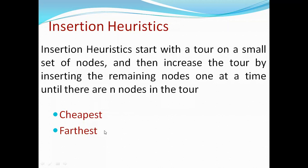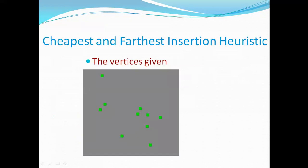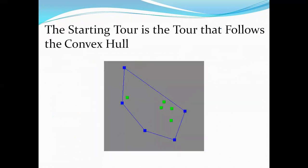There are two insertion modes: cheapest mode and farthest mode. The cheapest mode identifies the least-cost route based on the costing factor. The farthest mode considers traveling distance. Both cheapest and farthest insertion heuristics start with the convex hull as the starting tour — considering all destinations within the boundary, then inserting interior nodes.